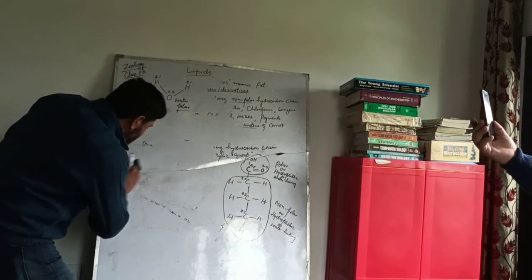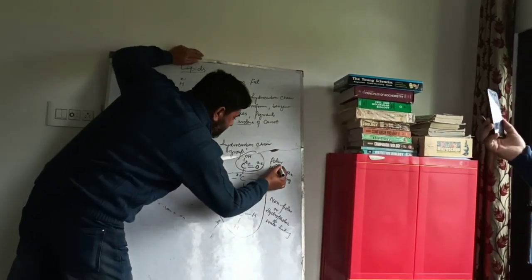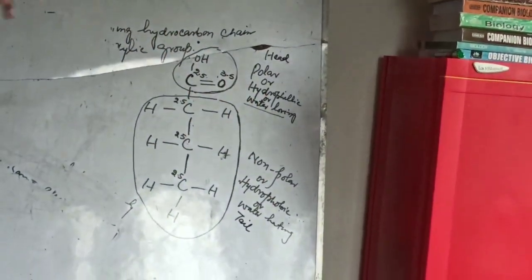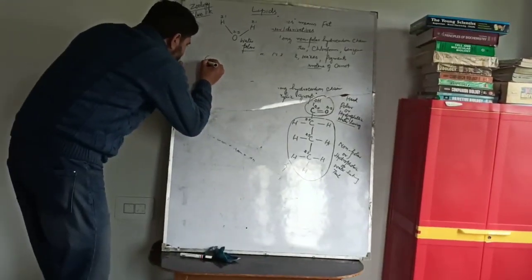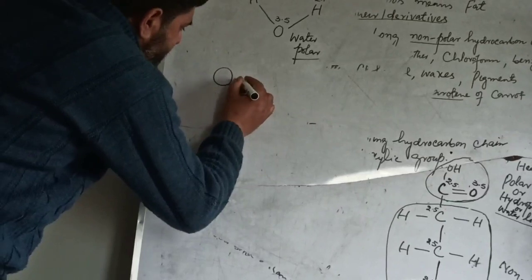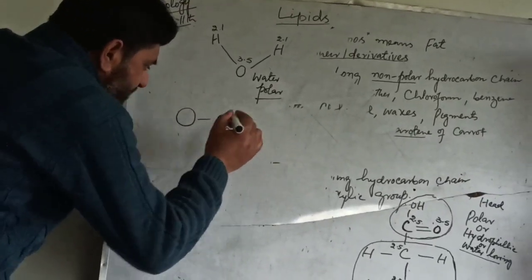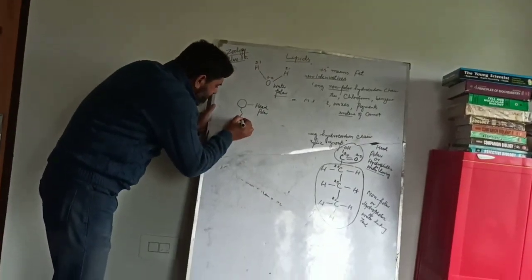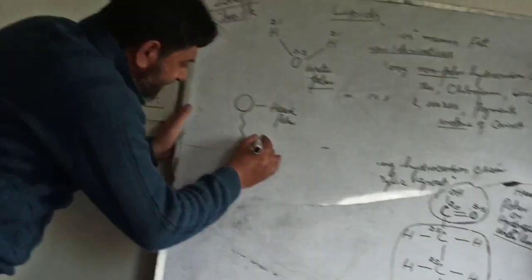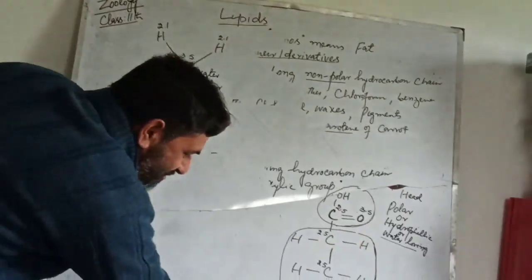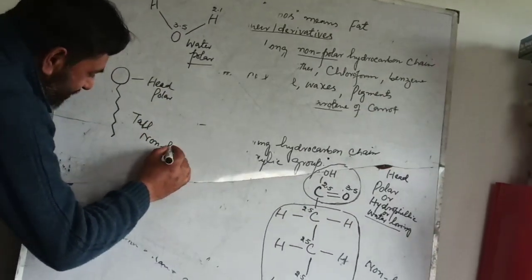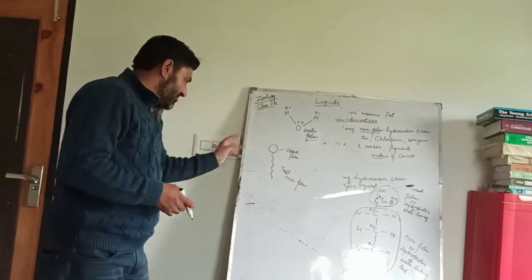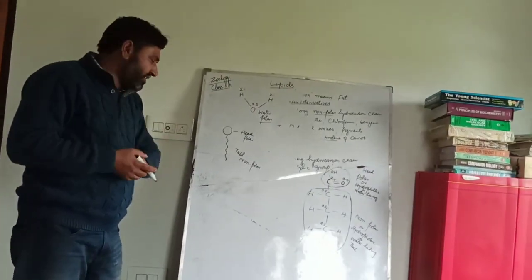Now if we go through the physical structure, this fatty acid consists of two parts. One is the polar part - that is called the head. And the nonpolar part is called the tail. So the physical structure of a fatty acid molecule consists of a head and a tail. The head is polar and hydrophilic - it is made up of the carboxyl group. The tail is the hydrocarbon chain, and it is nonpolar.